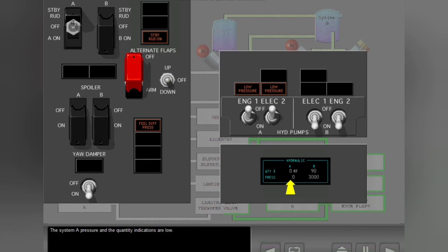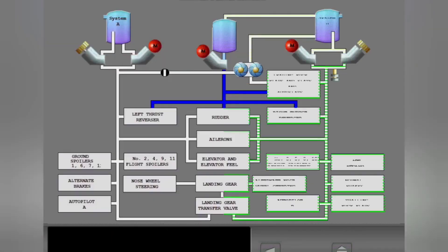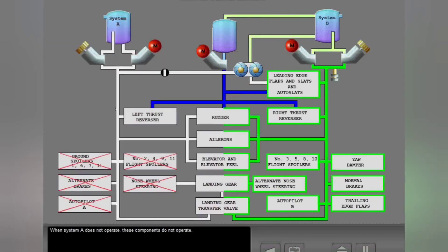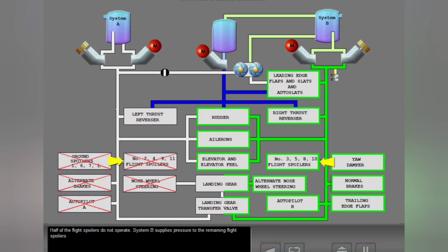The System A pressure and the quantity indications are low. When System A does not operate, these components do not operate. The rudder, the ailerons, the elevator, and the elevator feel continue to operate because System B supplies hydraulic pressure to these units. Half of the flight spoilers do not operate. System B supplies pressure to the remaining flight spoilers.